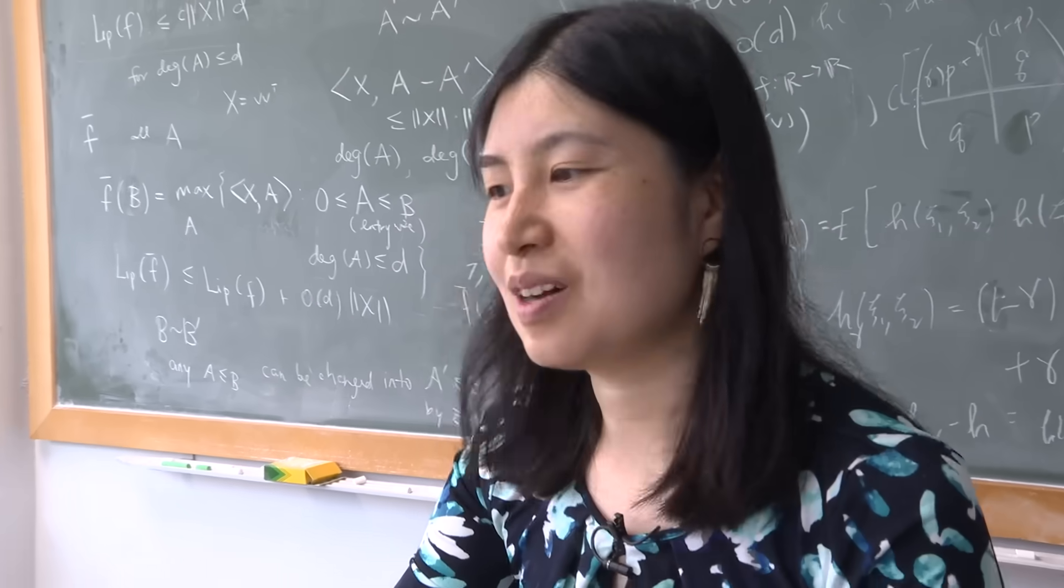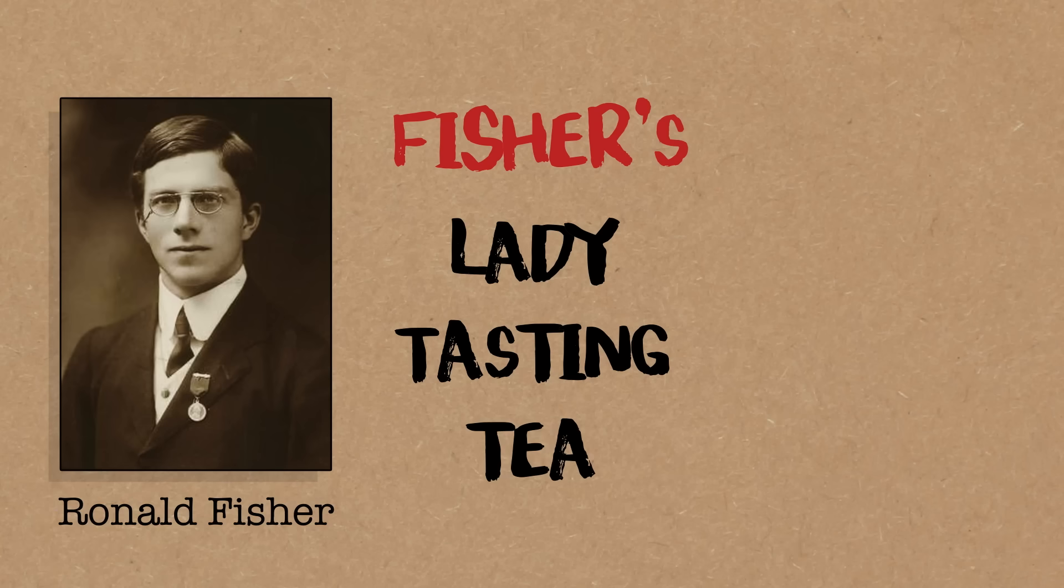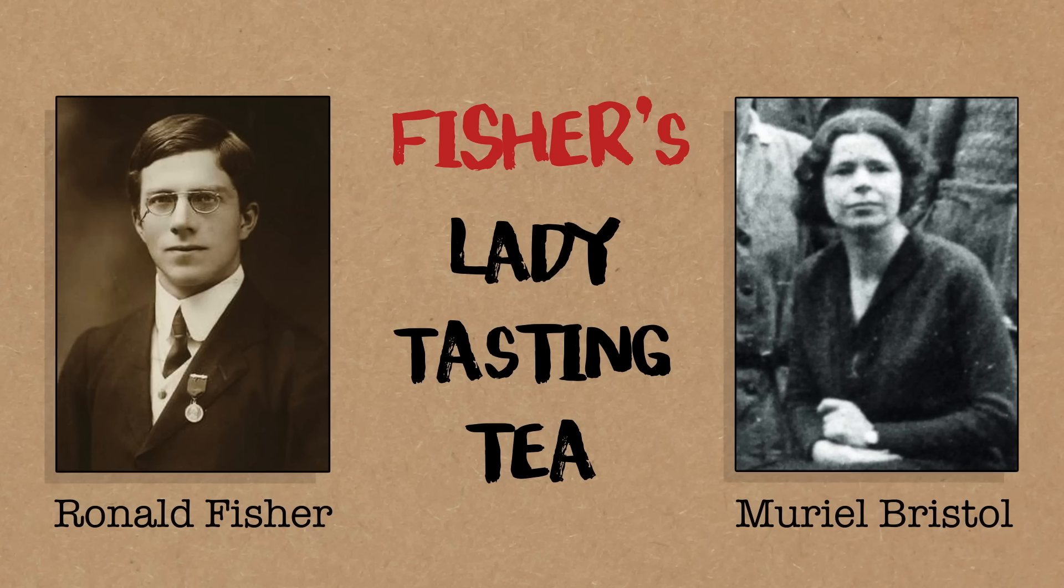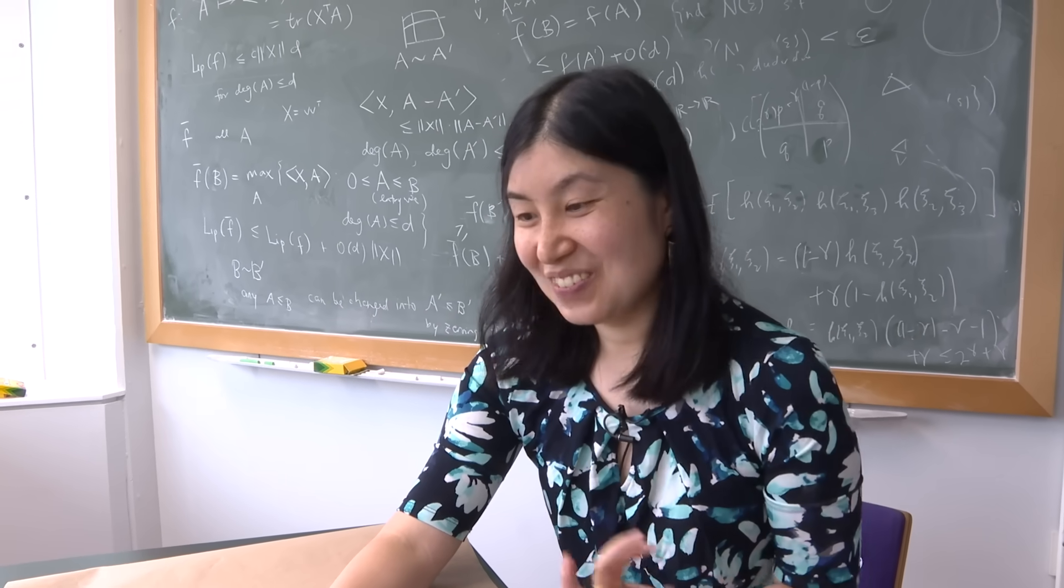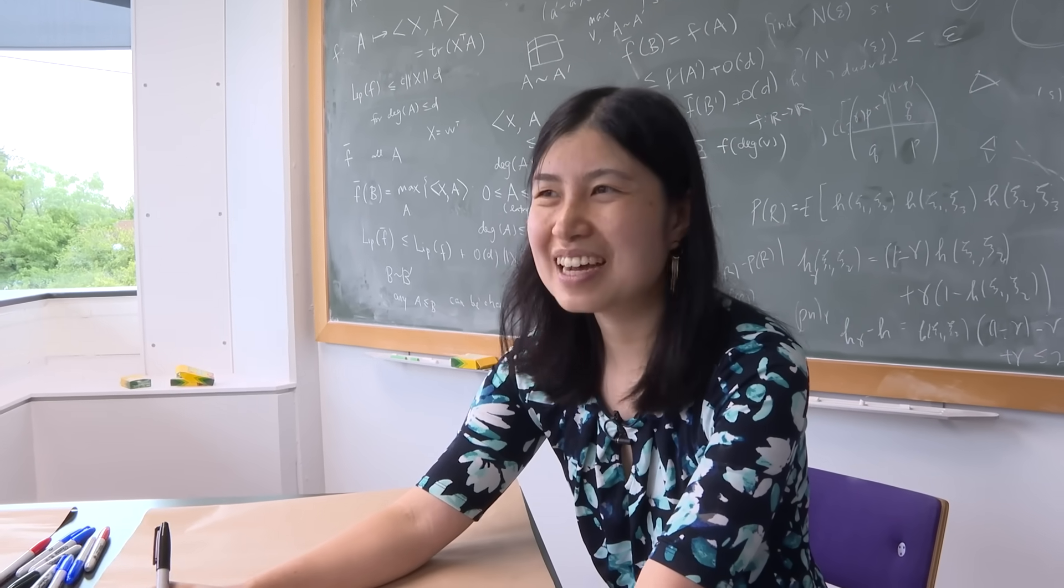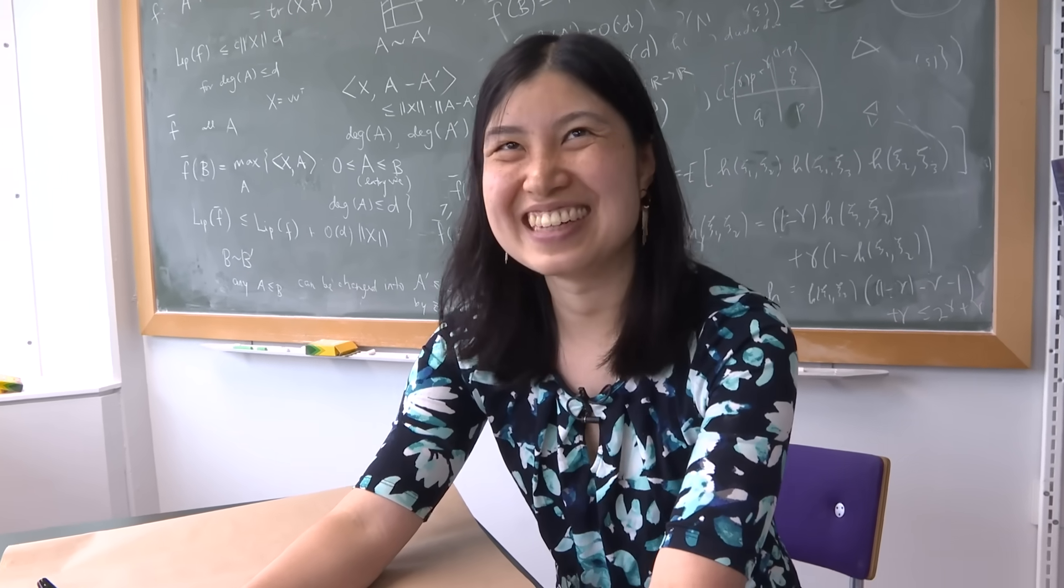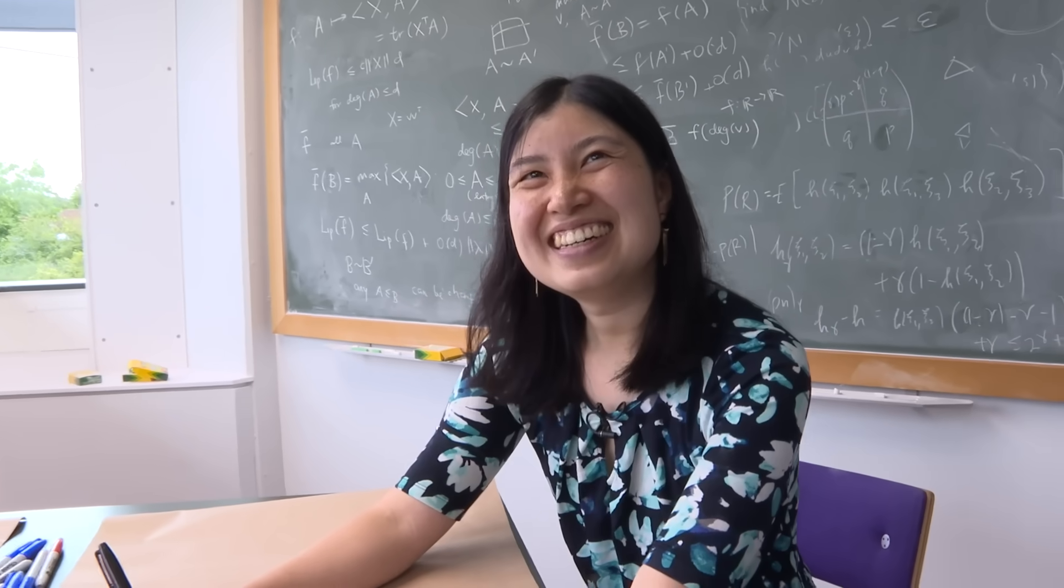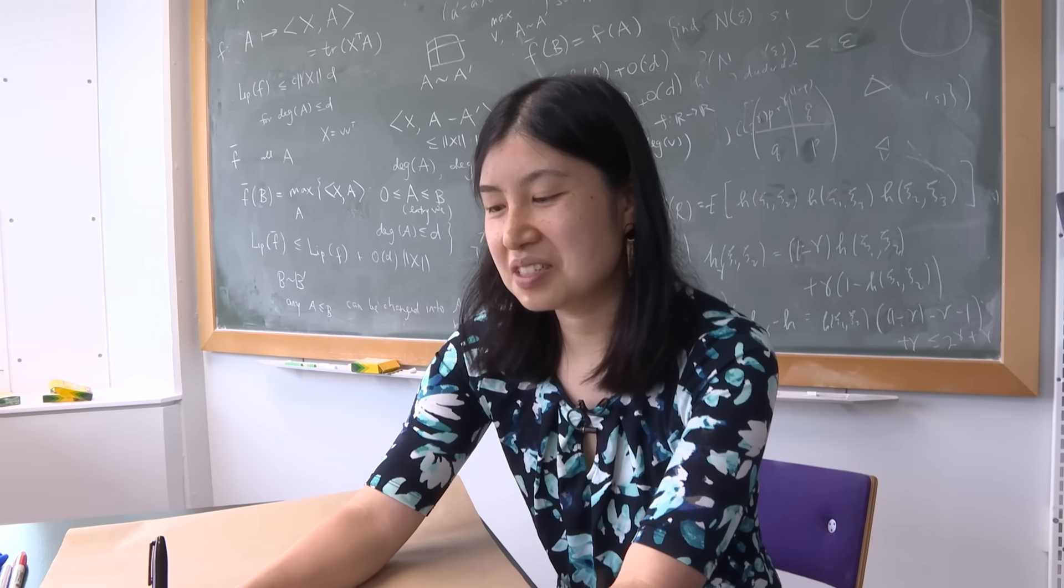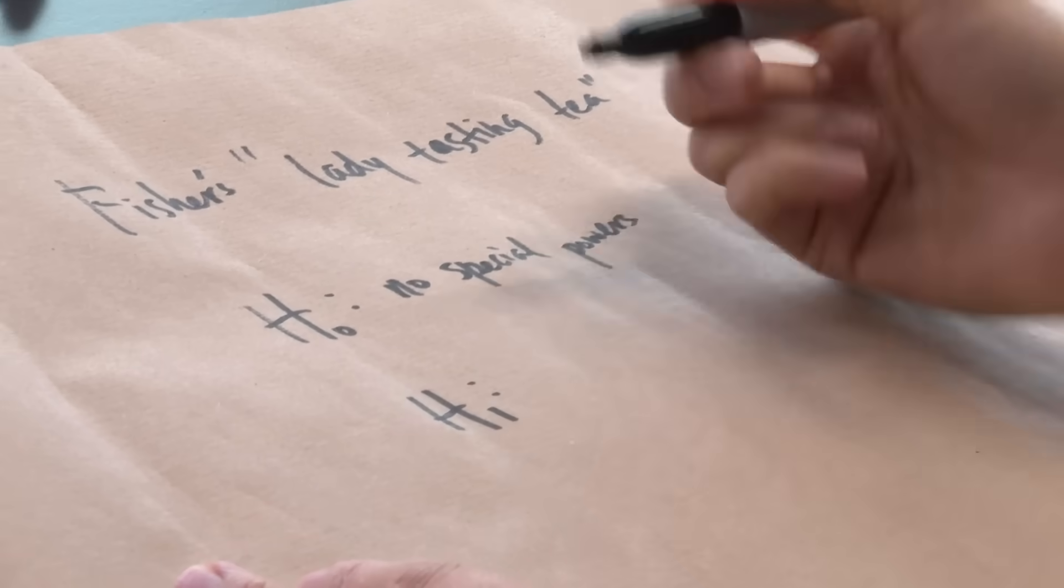So I'm going to back up a bit and talk about where permutation testing first arose in statistics. This is sometimes called Fisher's lady tasting tea experiment. The idea was that there was some lady who claimed that they could tell whether the milk was added before the tea or the tea was added before the milk just by tasting it. Fisher wanted to do an experiment to check this out. So he set it up as a hypothesis test. The null hypothesis is no special powers, and the alternative hypothesis is that she has some special powers.